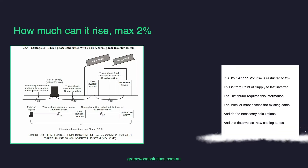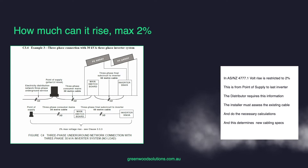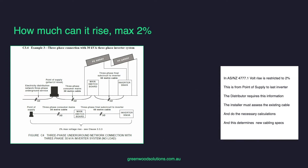In AS4777, volt rise is restricted to 2%, as you can see in the diagram. This is from the point of supply to the last inverter, and the distributor requires this information. The installer must assess the existing cable or cables, do the necessary calculations, and then this determines the new cabling specs.